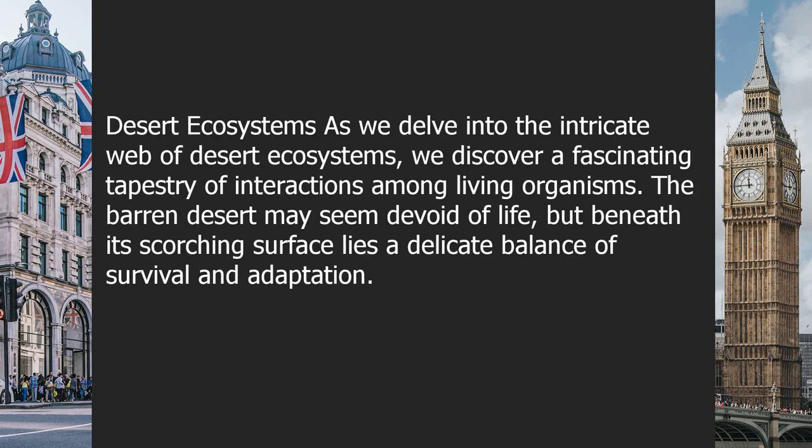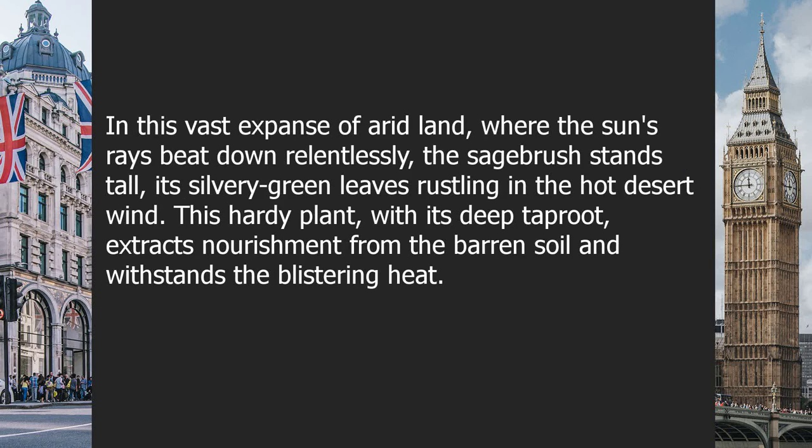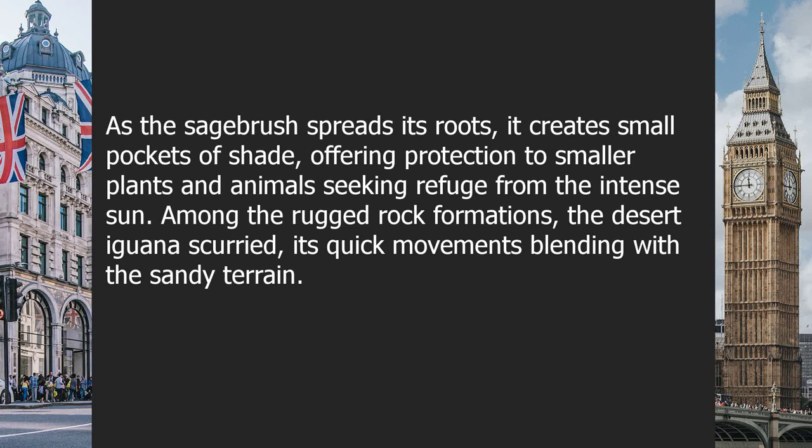Chapter 6: Desert ecosystems. As we delve into the intricate web of desert ecosystems, we discover a fascinating tapestry of interactions among living organisms. The barren desert may seem devoid of life, but beneath its scorching surface lies a delicate balance of survival and adaptation. In this vast expanse of arid land, the sagebrush stands tall — its silvery green leaves rustling in the hot desert wind. This hardy plant, with its deep taproot, extracts nourishment from the barren soil and withstands the blistering heat, creating small pockets of shade for smaller plants and animals.